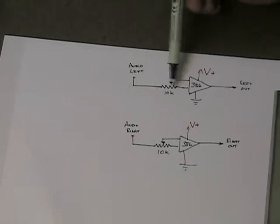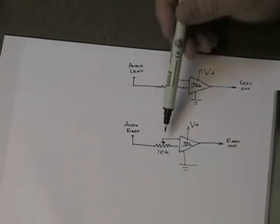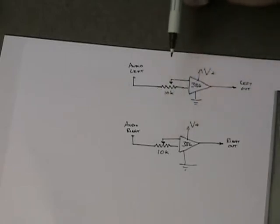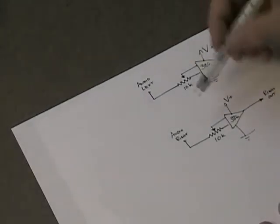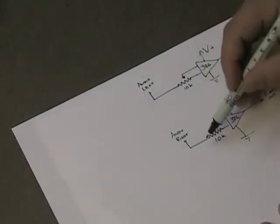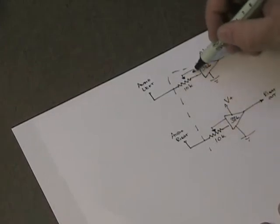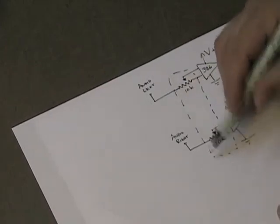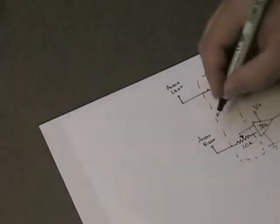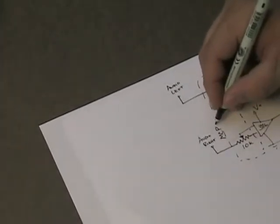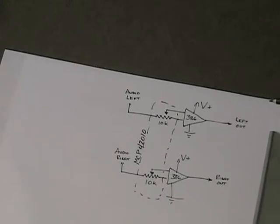Typically each of those has something like a 10k potentiometer on the input to act as a volume control. What I'm going to do is take these 10k pots and you can get a device from Microchip. It's the MCP42010 potentiometer chip with the SPI interface.